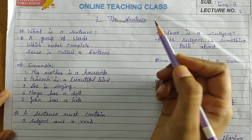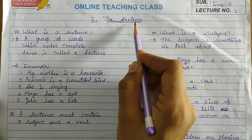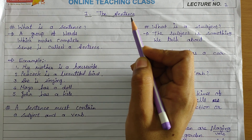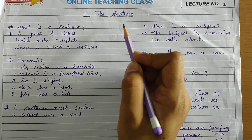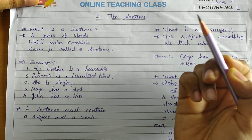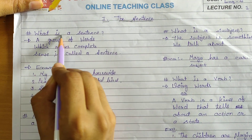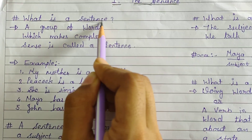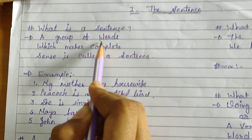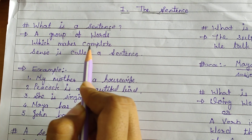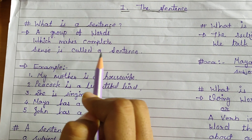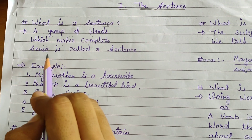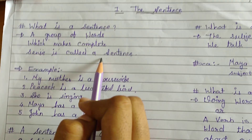You all know we use sentences when we speak, read, or write. So what is a sentence? Here is the definition of the sentence: a group of words which makes complete sense is called a sentence. A group of words which makes complete sense is called a sentence.